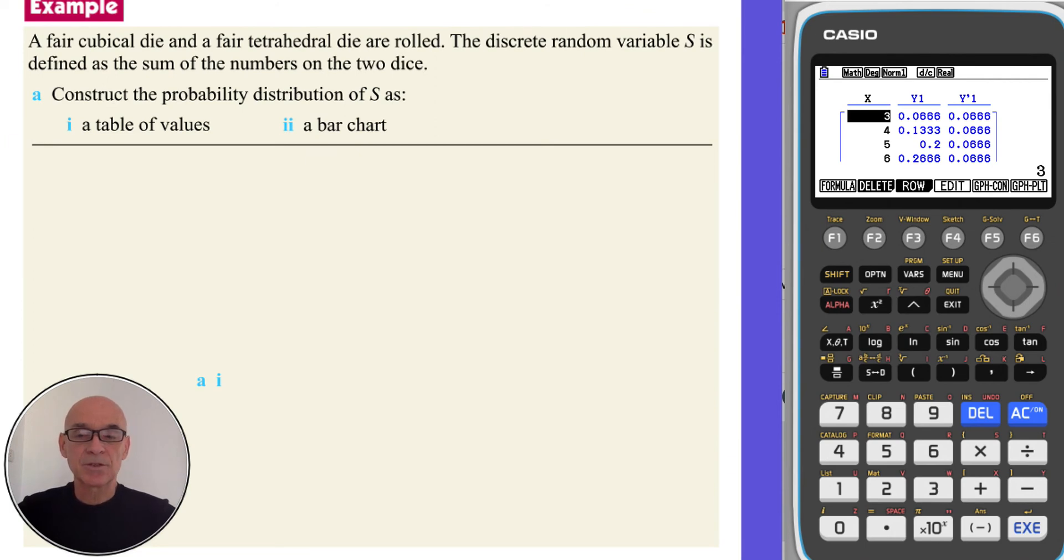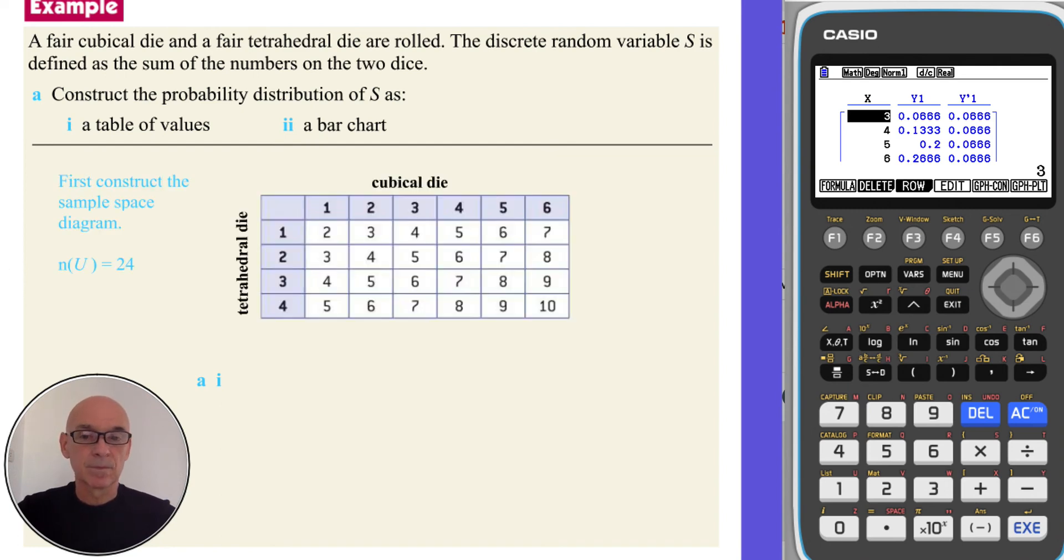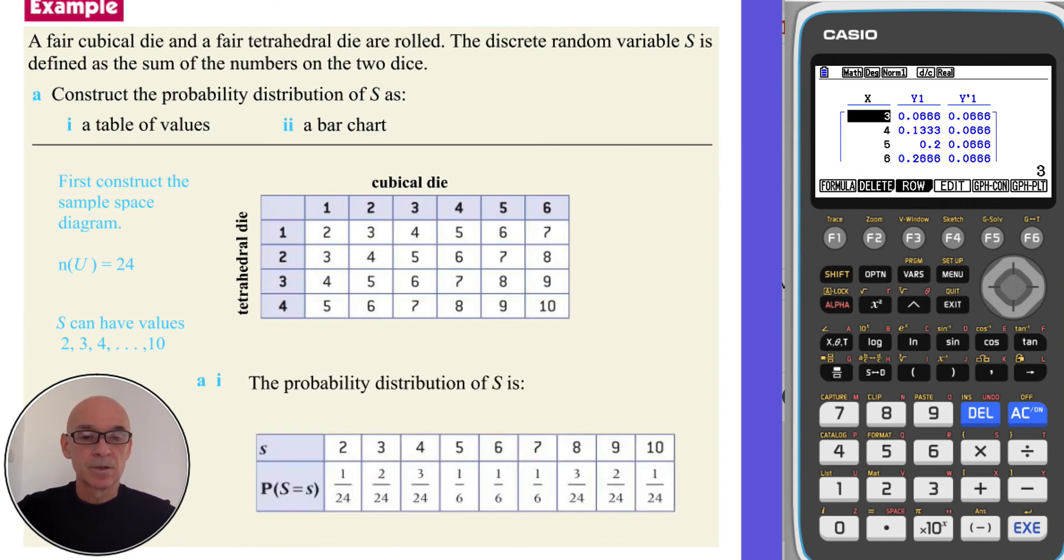In this last question, again, we're asked to construct the probability distribution. A fair cubicle die and a fair tetrahedral die are rolled. So we could start by drawing a sample space diagram. As shown here. So we can see that S, the sum of the scores on the die, can have values from 2 to 10. And the probability distribution is shown below.